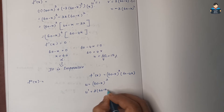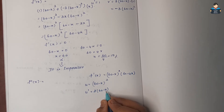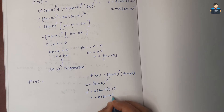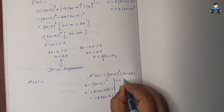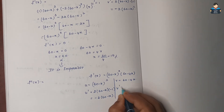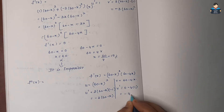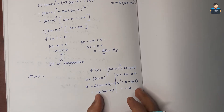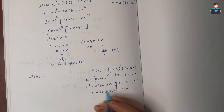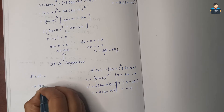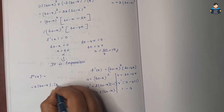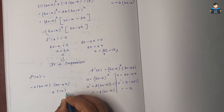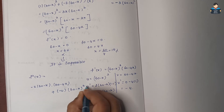For the second derivative test: let u = (60 minus x)² and v = (60 minus 4x). Then u' = 2(60 minus x)(minus 1) = minus 2(60 minus x), and v' = minus 4. Applying the product rule for f''(x): u'v + v'u = minus 2(60 minus x)(60 minus 4x) + (minus 4)(60 minus x)².